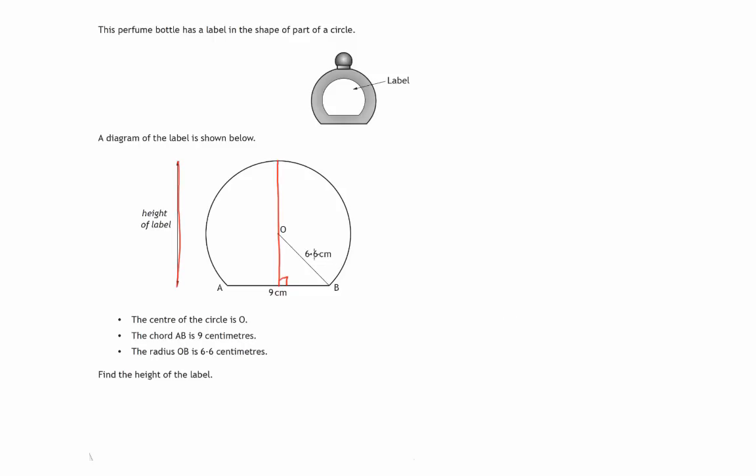You can see various things in here. This radius from the centre out to the circumference of the circle, OB, 6.6 centimetres, is exactly the same length as this radius which goes from O to the point at the top. Let's call that C and let's call this point D. So we can see that this is also 6.6 centimetres CO.